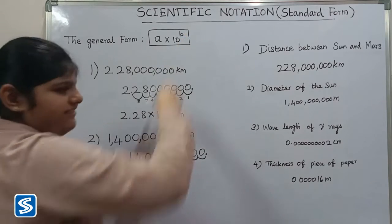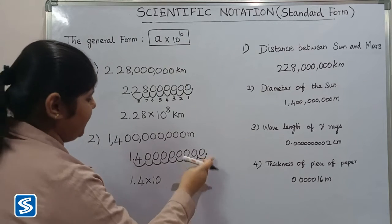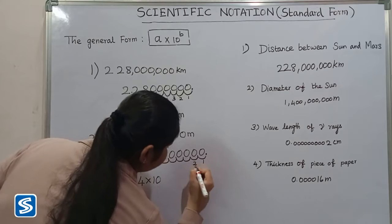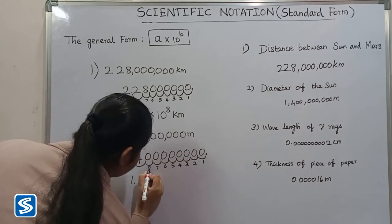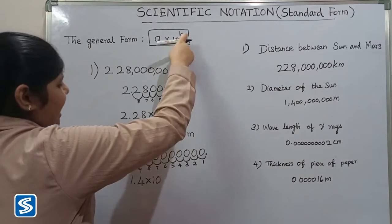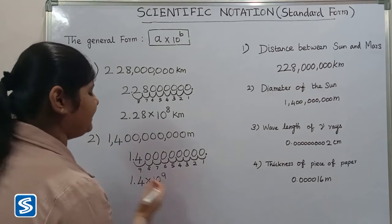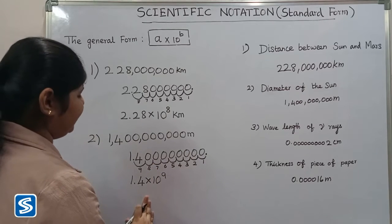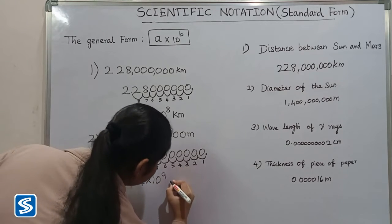Now we find the b value by counting how many places the decimal point was moved: 1, 2, 3, 4, 5, 6, 7, 8, 9. So the b value is 9. We moved the decimal point to the left, so the exponent is positive. Therefore, the scientific notation of this number is 1.4 × 10^9 meters.